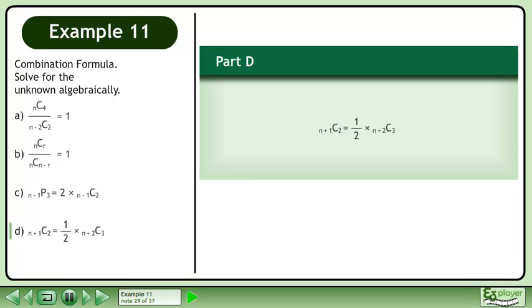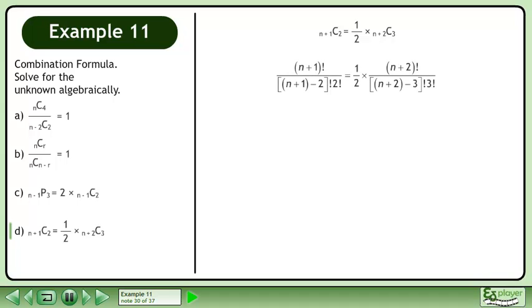In Part D, find n in n plus 1 choose 2 equals 1 half times n plus 2 choose 3. Expand using the combination formula.